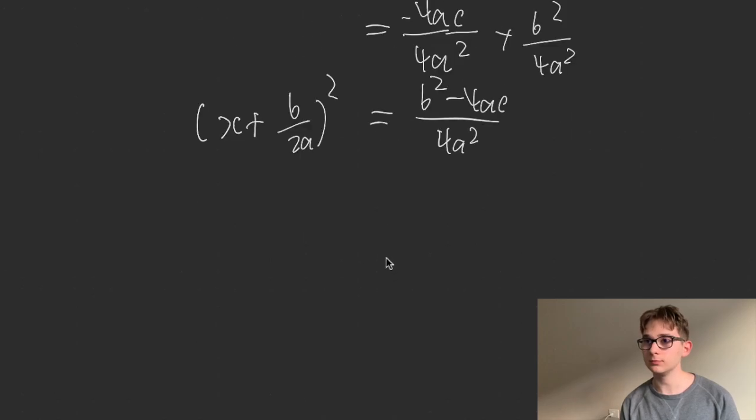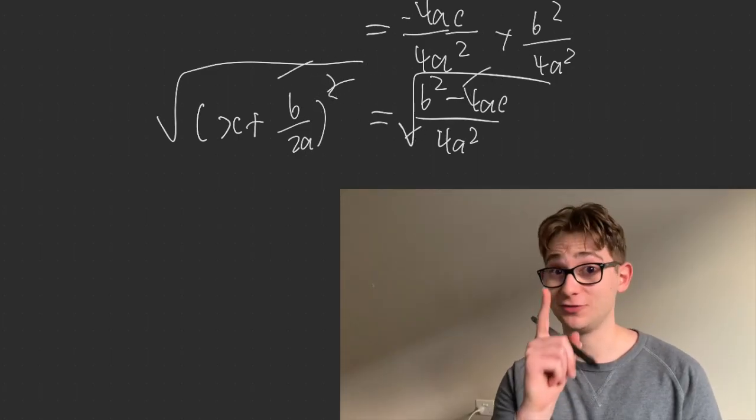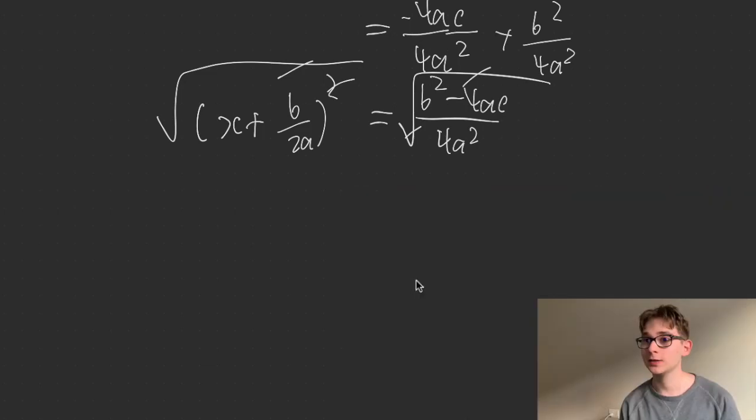You're going to get b squared minus 4ac on 4a squared, which is then equal to x plus b on 2a squared. Then square root both sides. Now this is where it's going to get interesting. So then that's cancelled, that's an x plus b on 2a.